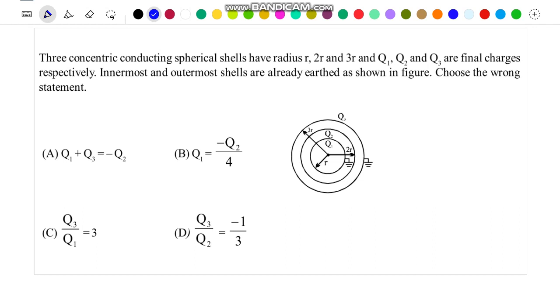Hello friends, in this problem there are three concentric conducting spherical shells of radii R, 2R and 3R and having charges Q1, Q2